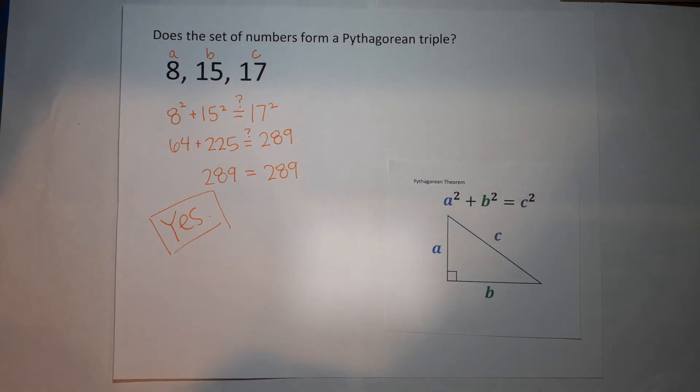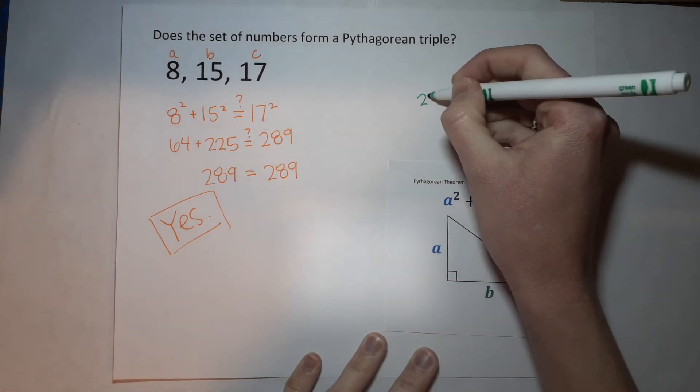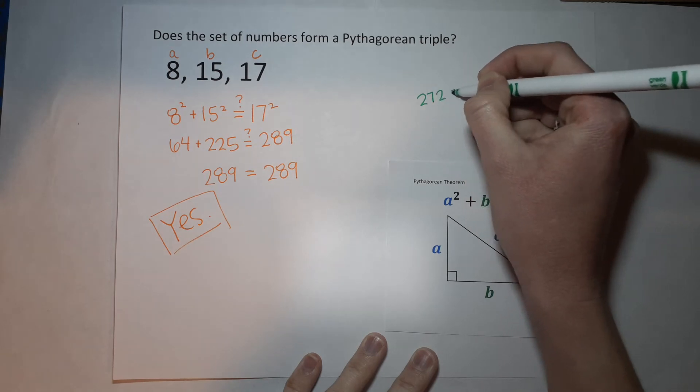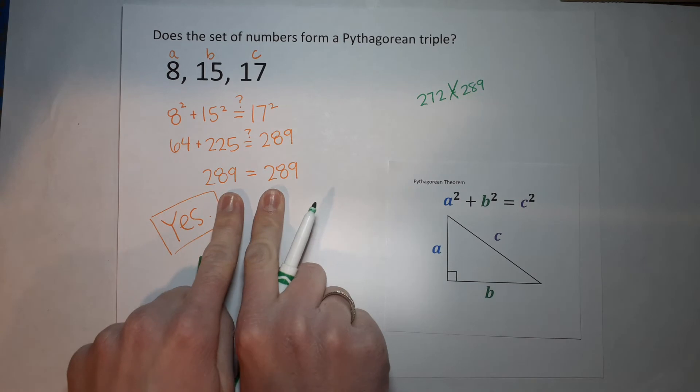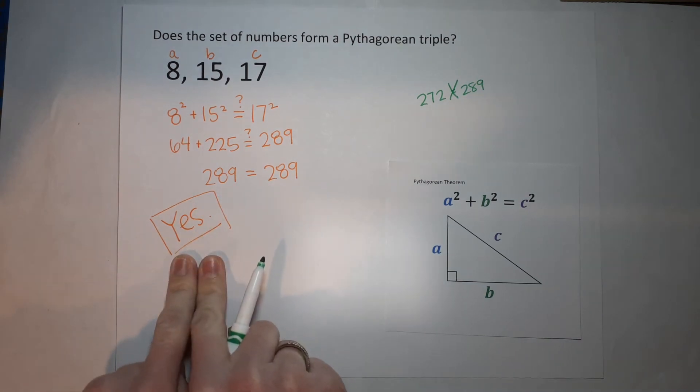If we had gotten something like 272 equals 289, 299, then that would not be it. But since they're equal, yes, it is.